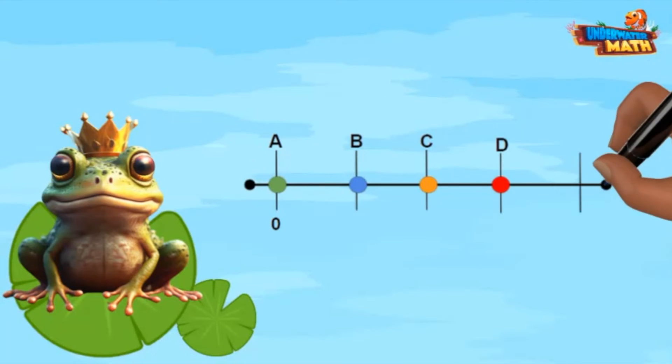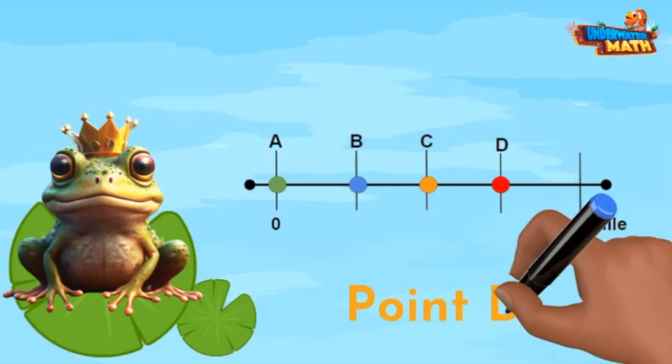Here comes another number line floating up. It has several points already labeled. I want to know what fraction point D on the number line represents.